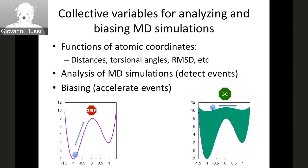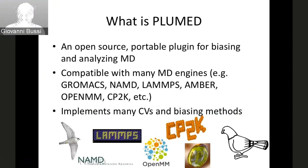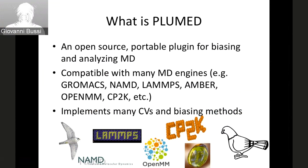PLUMED is a plugin aimed at calculating collective variables and adding biasing potentials on those collective variables. As such, it can be used mostly in two ways: first, you can use it to analyze a trajectory, and second, to modify the trajectory on the fly. In the latter case, it usually runs in combination with standard MD software. Many of these codes are common from the biomolecular community, and others are used in material science, for both classical and ab initio MD. The power of PLUMED is in its capability to implement a vast number of CVs and biasing methods using a simple syntax that is transferable across different MD codes.